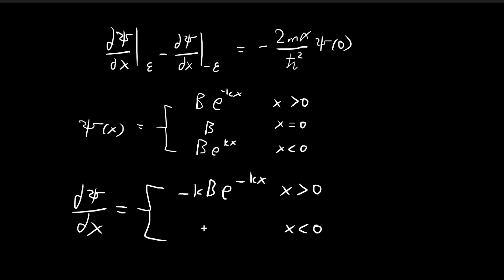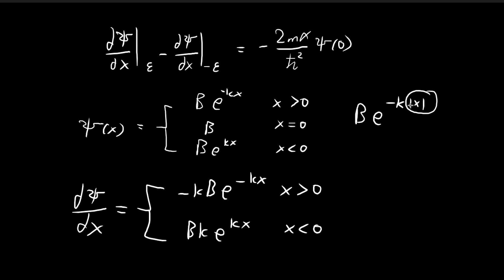For x smaller than 0, we get b times k times e to the power of positive kx. We don't know what happens when x equals 0 because the derivative isn't well defined there. This whole term can be rewritten as negative k times the absolute value of x. The absolute value of x is well defined at x equals 0, but its derivative is not, and this problem carries over to our function.